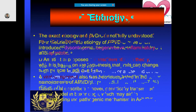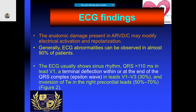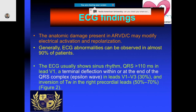On the ECG, changes are seen in 90 percent of cases. The rhythm is sinus but there is a wider QRS, especially in lead V1. There is a terminal deflection within or at the end of the QRS — this is what is called the epsilon wave, characteristically seen in leads V1 to V3, present in up to 30 percent of cases. T-wave inversion is also seen in the right precordial leads. None of these ECG findings are present in 100 percent of patients.